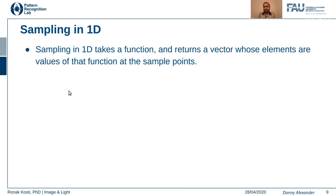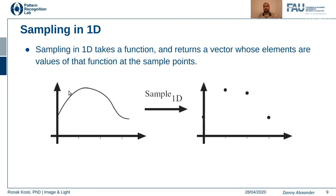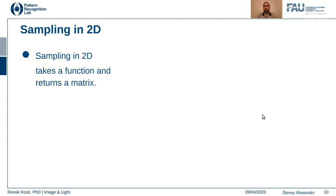How do we do sampling? In one dimension, we take our function and return a vector of values — we take fixed or variable time durations, measure the value of the function at those times, and generate a vector. Here you can see a continuous signal where we choose certain time points, take those values, and that is how we sample a 1D signal. Similarly in two dimensions, instead of a vector of values we get a matrix of values.